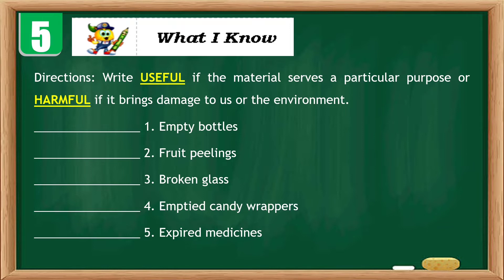Directions: Write 'useful' if the material serves a particular purpose, or 'harmful' if it brings damage to us or to the environment. Number one: empty bottles. Number two: fruit peelings. Number three: broken glass. Number four: empty candy wrappers. Number five: expired medicines.